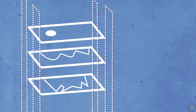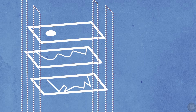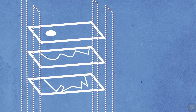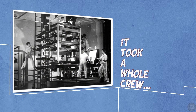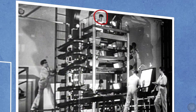Walt Disney Studios developed a multi-plane camera. With this device they could mount and shoot different layers of a background moving at different speeds, creating the illusion of the parallax effect. It took a whole crew to operate the multi-plane camera — one person would sit at the top overseeing the scene and taking the shots, while the others would mount the layers onto the camera and move them accordingly.